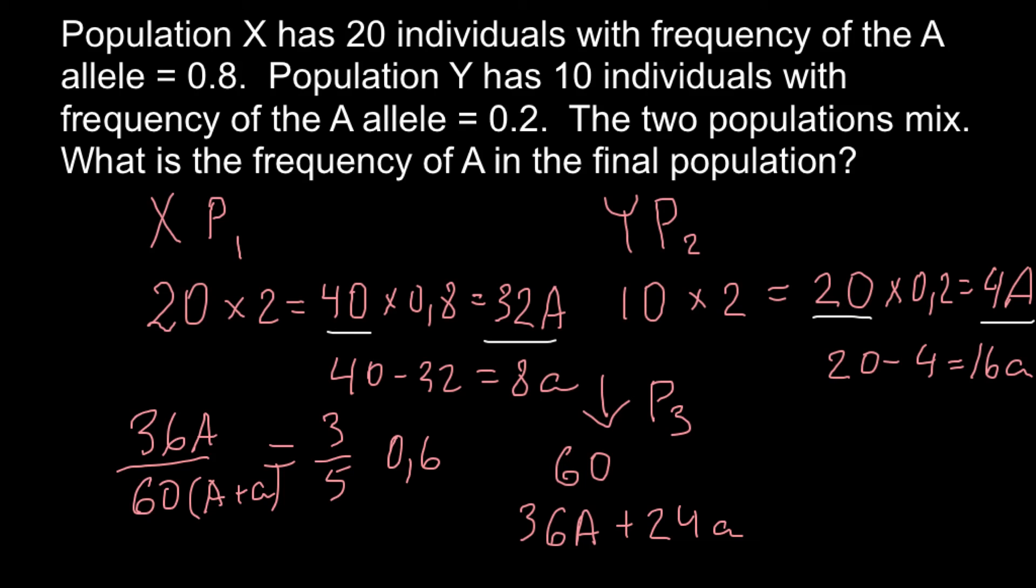Or if you need an answer as a percentage, we just have to multiply by 100. And this is going to be 60%. So 60% of the capital A alleles. And of course, the rest 40% would be small a alleles.